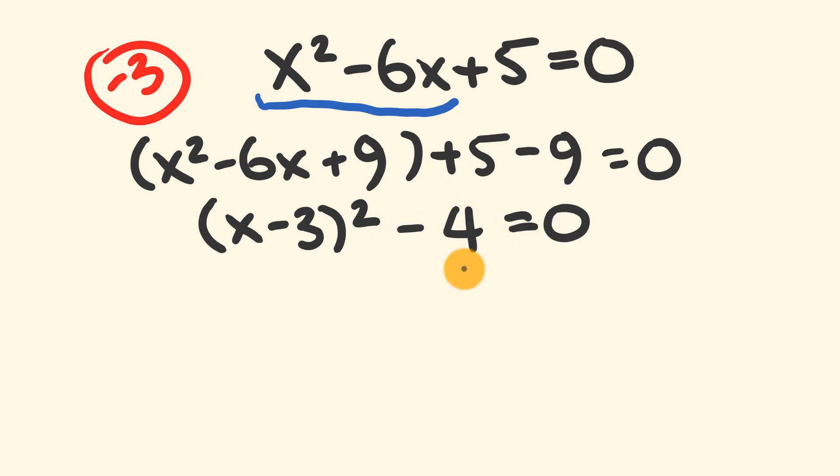Now we're going to take our -4 and put it on the right-hand side of our equation. We end up with (x - 3)², and this equals, not -4, we add 4 to this side, we add 4 to this side, this equals 4.